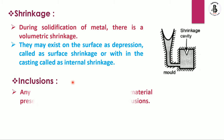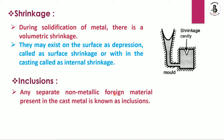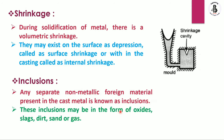The next defect is inclusions. Any separate non-metallic foreign material present in the casting metal is known as an inclusion. These inclusions may be in the form of oxides, slags, dirt, sand, or gas. During production of molten metal, such foreign particles can be present, and they insert into the mold cavity and become part of the solidification process, causing inclusions. You should control and reduce these foreign particles.